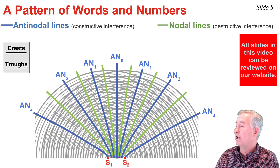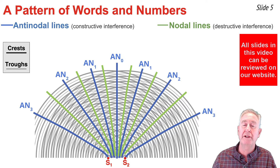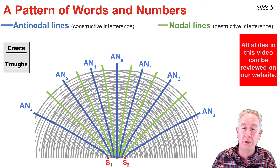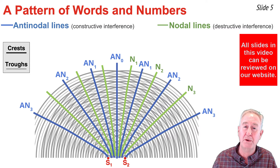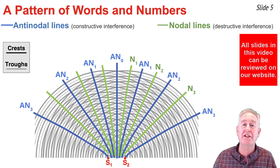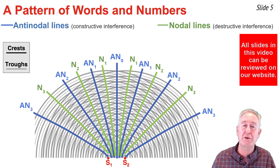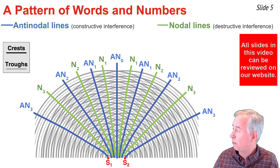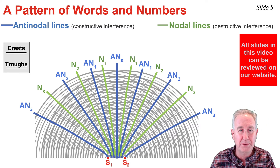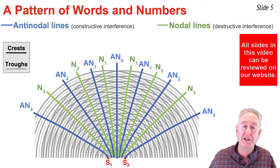In between every antinodal line is a nodal line, and these nodal lines will be given an order number as well. The first one is the first order nodal line, the second is the second order nodal line, and the third is the third order nodal line. I represent them as N1, N2, and N3. The same applies to the left of the central antinodal line, labeled N1, N2, and N3 as well.